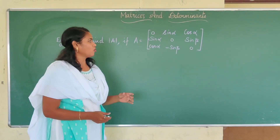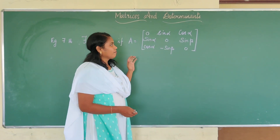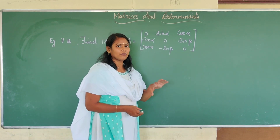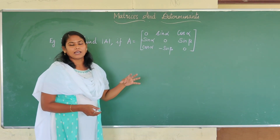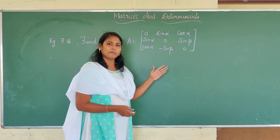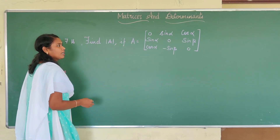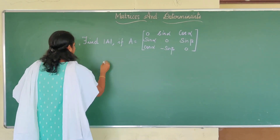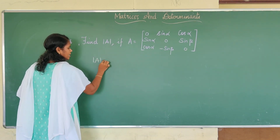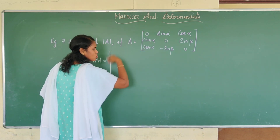We are going to find the determinant value of this 3 by 3 matrix. You all know how to find the value of a determinant of order 2 by 2. We have seen through the minors and cofactors. And here, we are going to see the value of the determinant using the 3 by 3. First, we will represent this as determinant of A, and we have to take this matrix to a determinant.